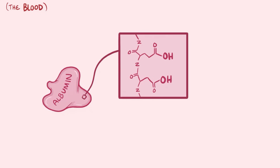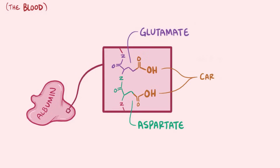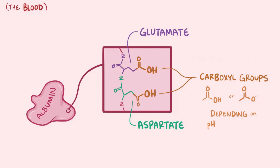Sometimes, though, total calcium levels in the blood — which includes diffusable and non-diffusable — can vary a bit depending on the blood's pH and protein levels. This happens because albumin has acidic amino acids like glutamate and aspartate, and these have carboxyl groups in the form of COO- or COOH. Overall, the balance of COO- and COOH changes based on the pH of the blood.